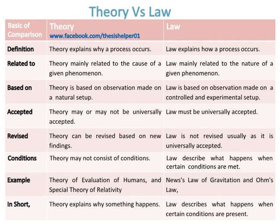Theory is based on observations made on a natural setup, whereas law is based on observations made on a controlled and experimental setup. Theory may or may not be universally accepted, whereas law must be universally accepted.